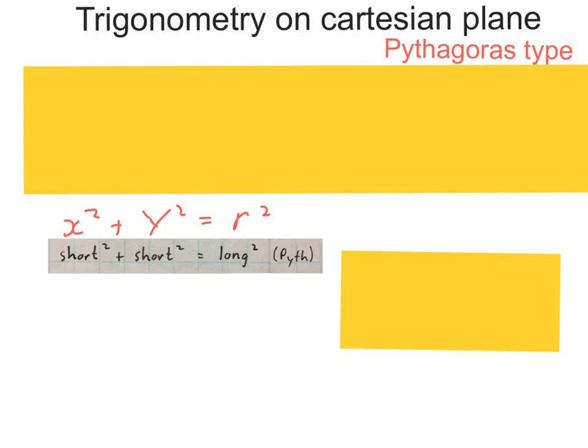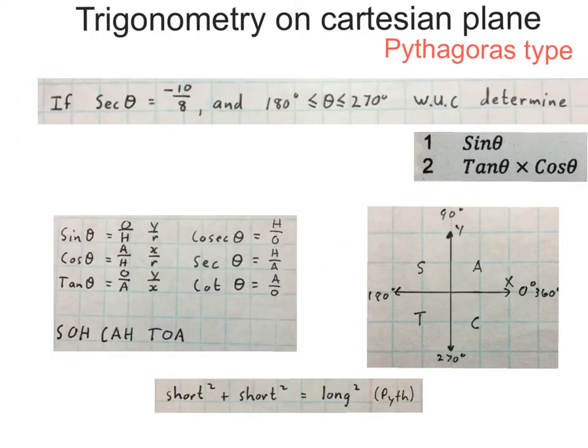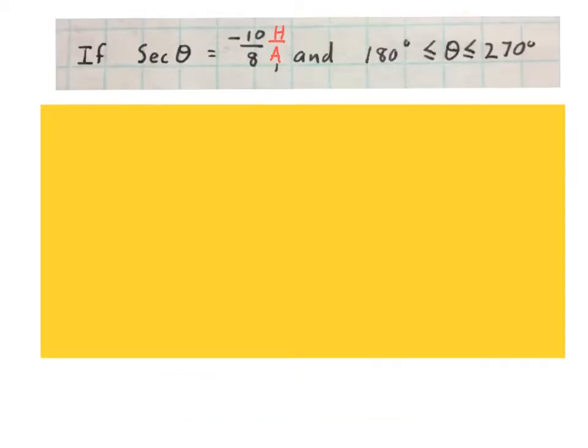So this is our original problem, and then this is the background knowledge that you need to know. The original problem said that if sec theta is minus 10 over 8, which is going to be H over A, and this theta lies between 180 and 270, I'm now going to put this on a Cartesian plane.